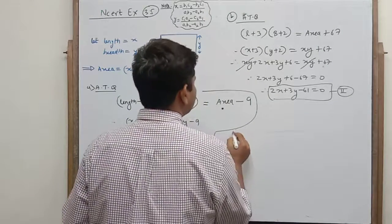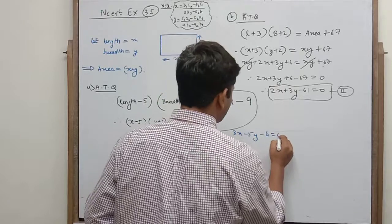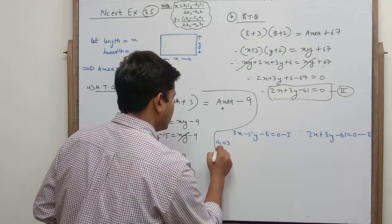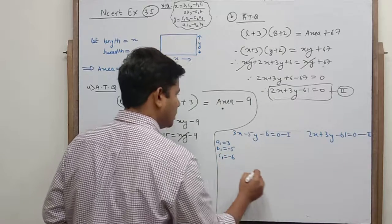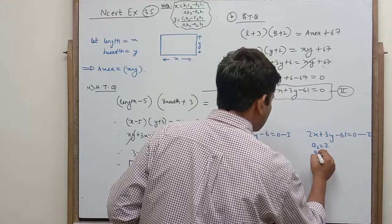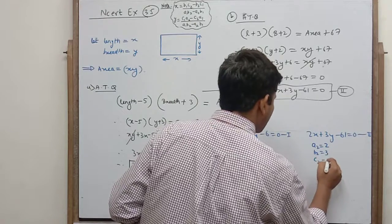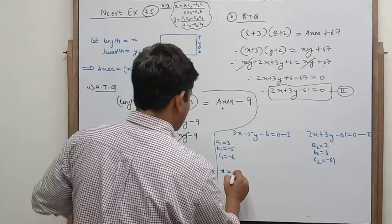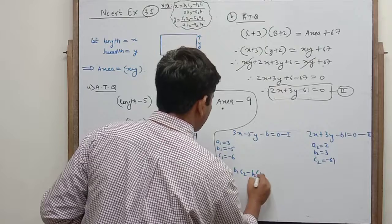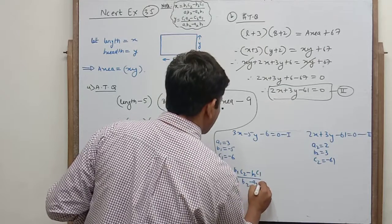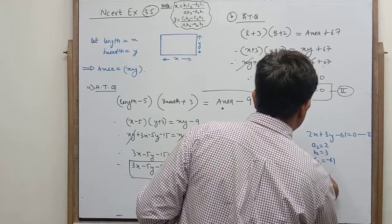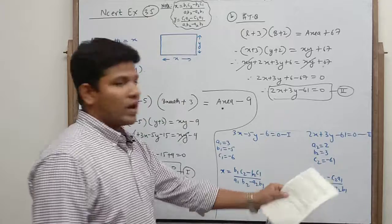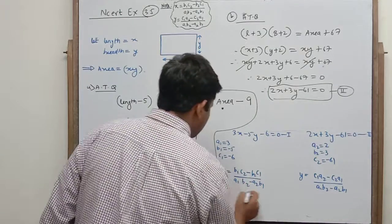So we have Equation 1: 3x minus 5y minus 6 equals 0, and Equation 2: 2x plus 3y minus 61 equals 0. We identify values: a1=3, b1=-5, c1=-6, a2=2, b2=3, c2=-61. Using the cross multiplication method, x equals (b1*c2 minus b2*c1) upon (a1*b2 minus a2*b1), and y equals (c1*a2 minus c2*a1) upon (a1*b2 minus a2*b1).